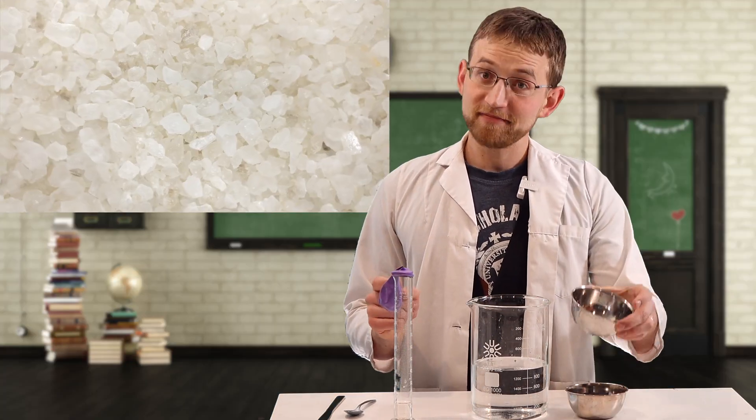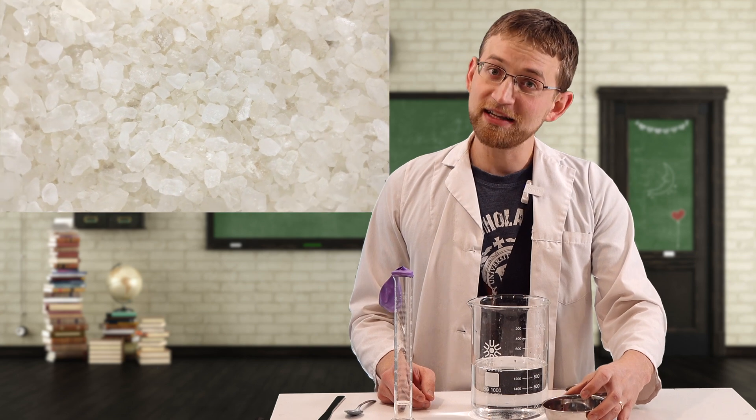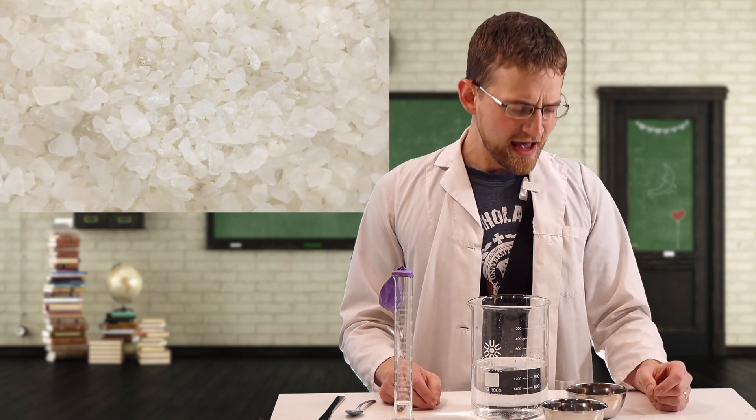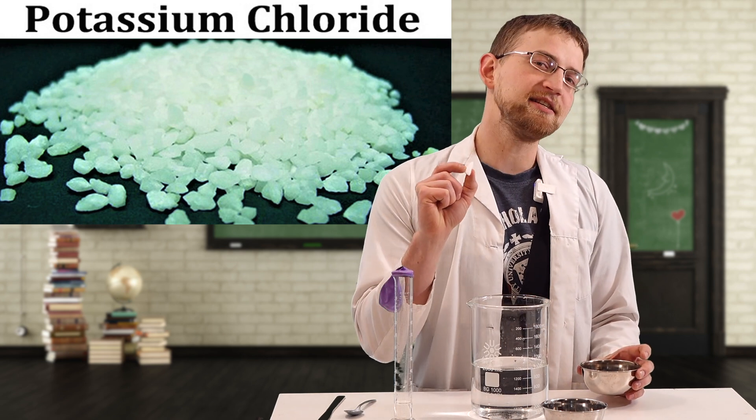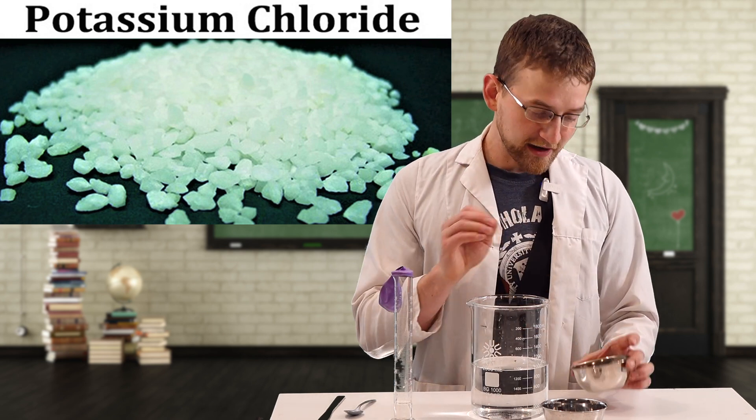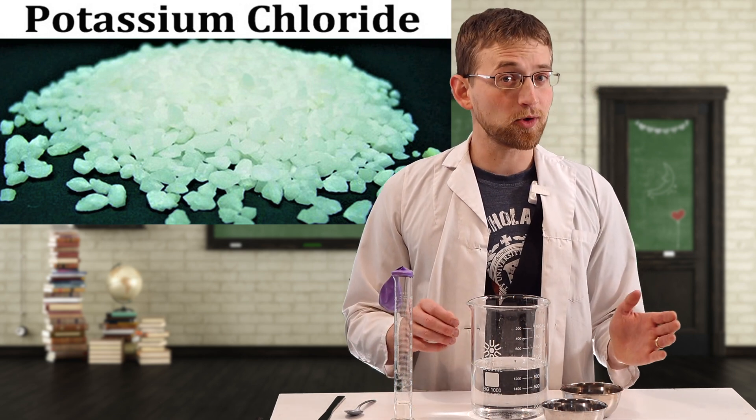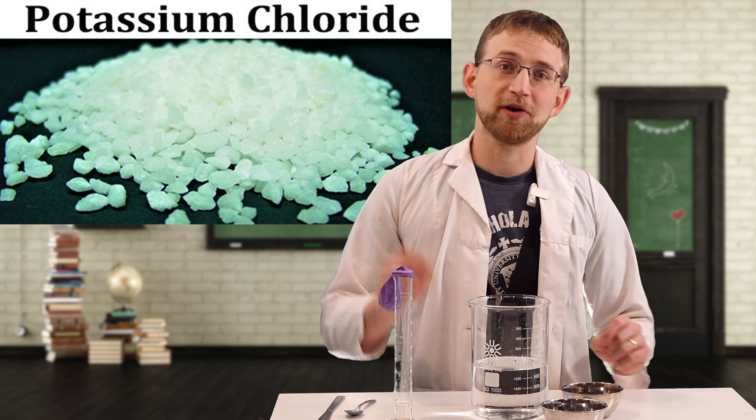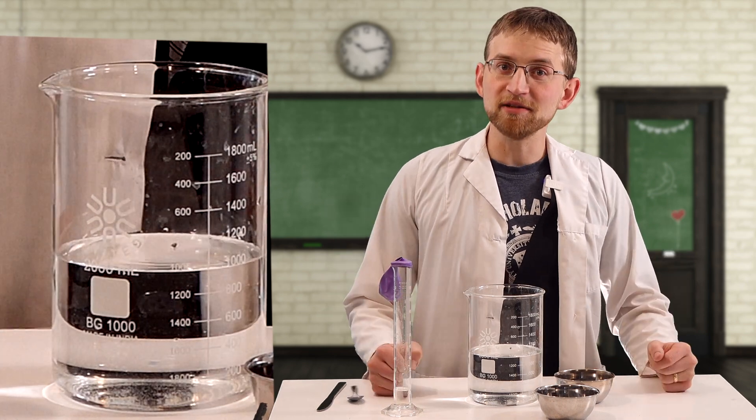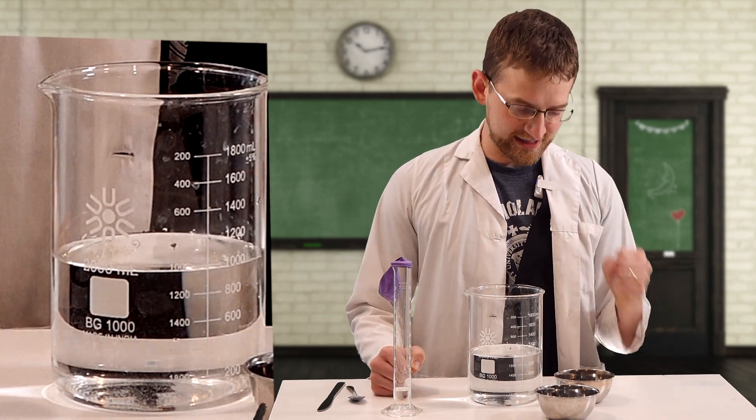Next, we have table salt. Just a little bit of salt, about five grams. And then the last ingredient is potassium chloride. And again, about five grams of potassium chloride per one liter of water and hydrochloric acid mixture. Let's mix them all together and make some gastric acid.